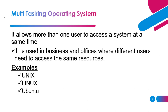Next is multi-user operating system. This allows more than one user to access the operating system at the same time, meaning multiple users can access the same system simultaneously. It is used in businesses and offices where different users need to access the same resources. A single resource being used by multiple users is the key characteristic of a multi-user operating system. Examples include Unix and Linux.